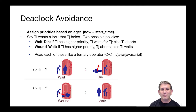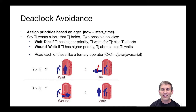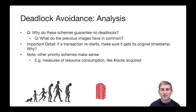The wound-wait protocol is a little bit different. If TI has higher priority — that is to say the old person is waiting for the port-a-potty — then TJ aborts; TI wounds TJ, as shown in the picture in the lower left. However, if the one outside is the lower priority transaction, then it just waits.